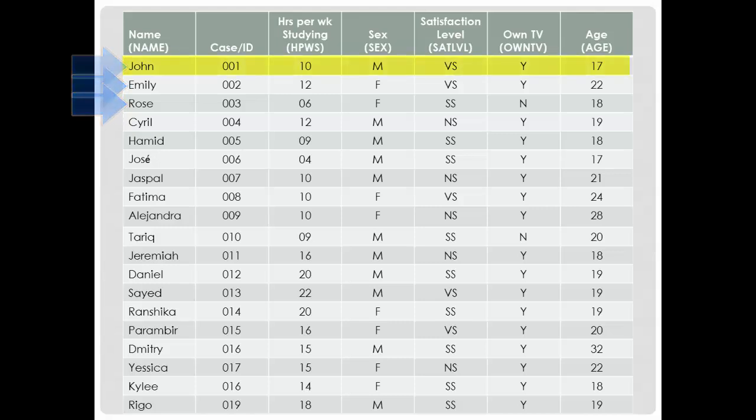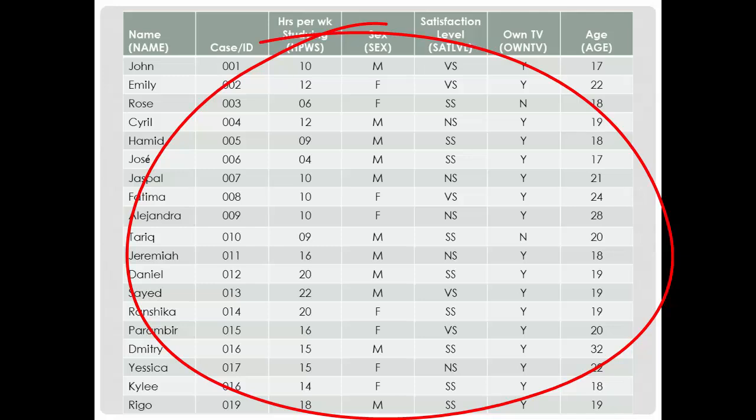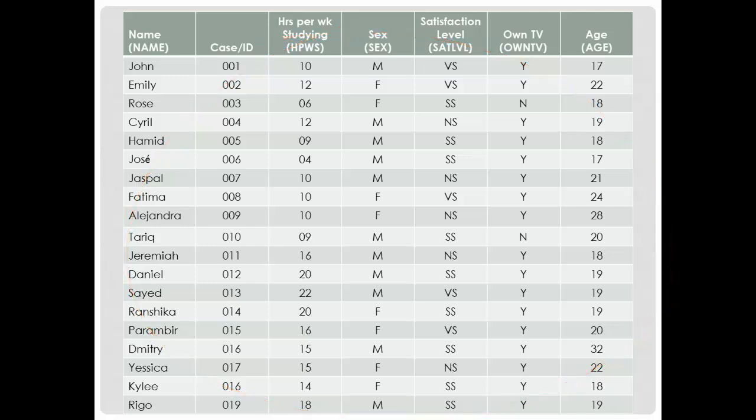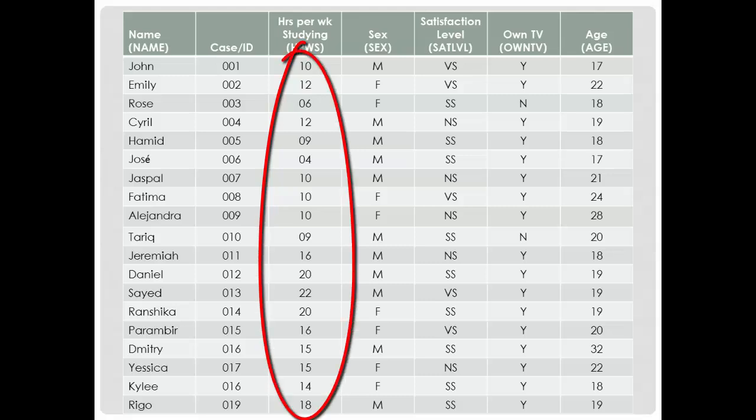Our first respondent, or record, is John, who said he studies ten hours a week. He's male, very satisfied with his grade, owns a television, and is seventeen years old. But you're looking at a bunch of numbers and answers. If you want to summarize the data, you could come up with an average number of study hours a week, and that would help describe the data.